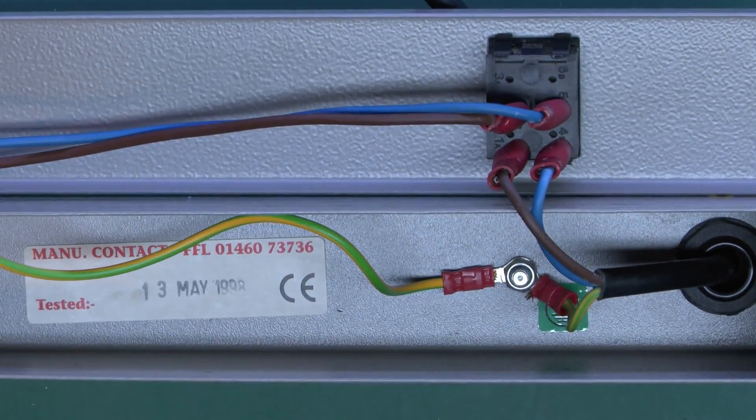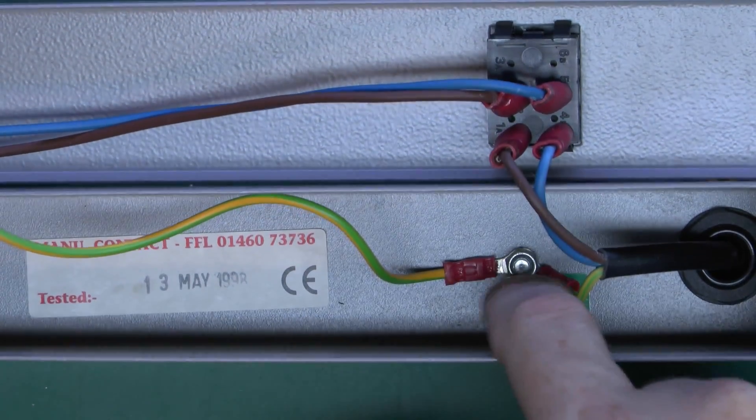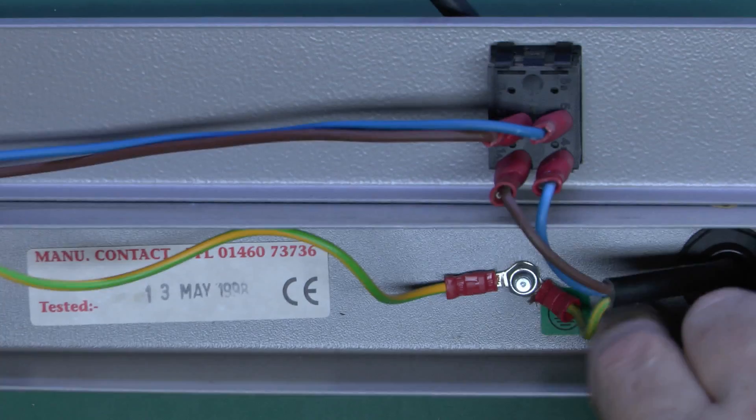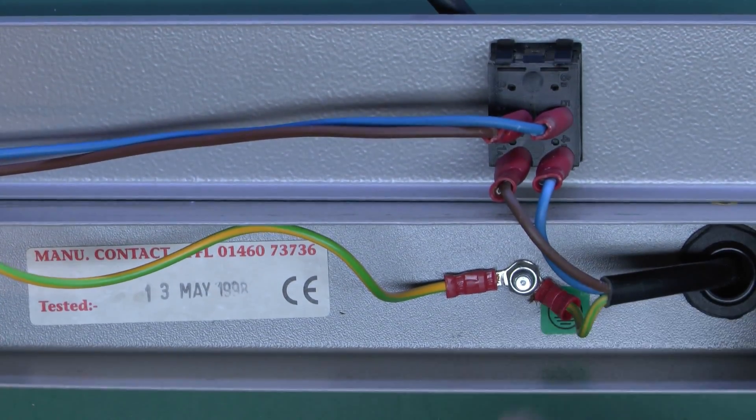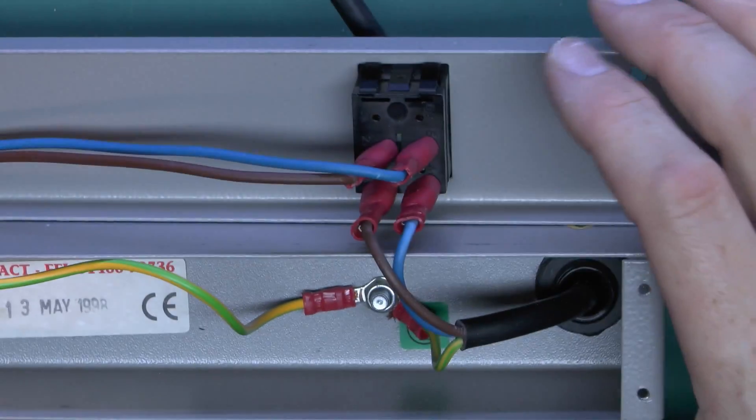And a phone number. Of course that phone number no longer works because there's insufficient number of digits there. Earth stirred down here at the bottom, just crimped on and just comes in direct from the mains lead. Then we've got the wire also goes across to the outlet to the other end.